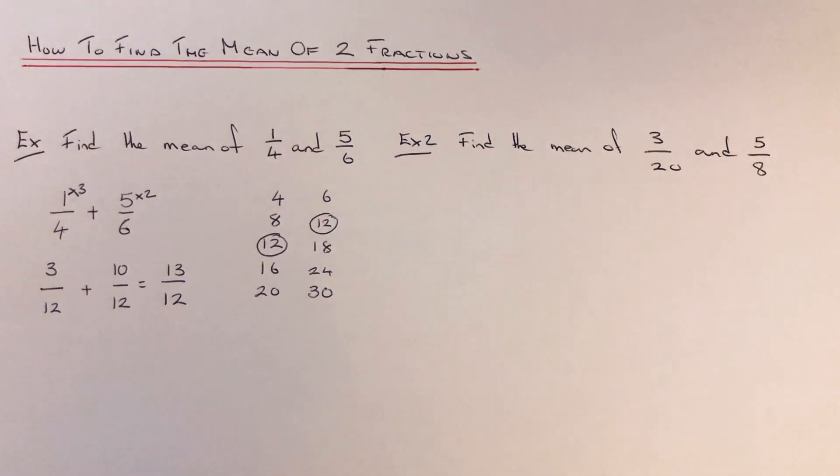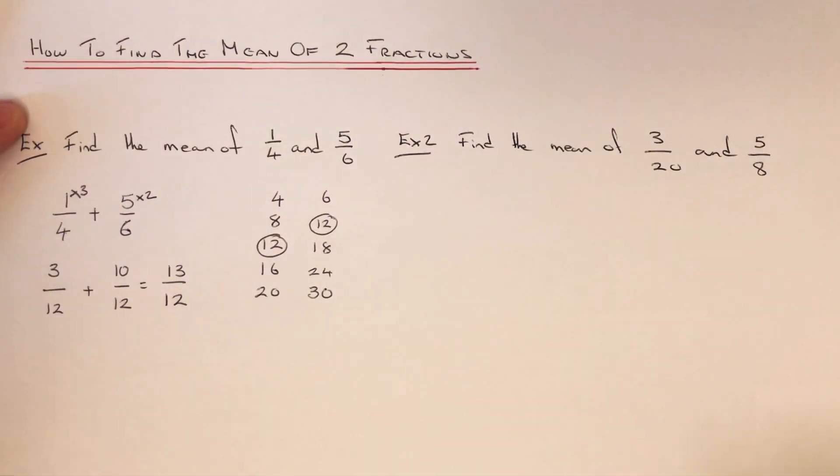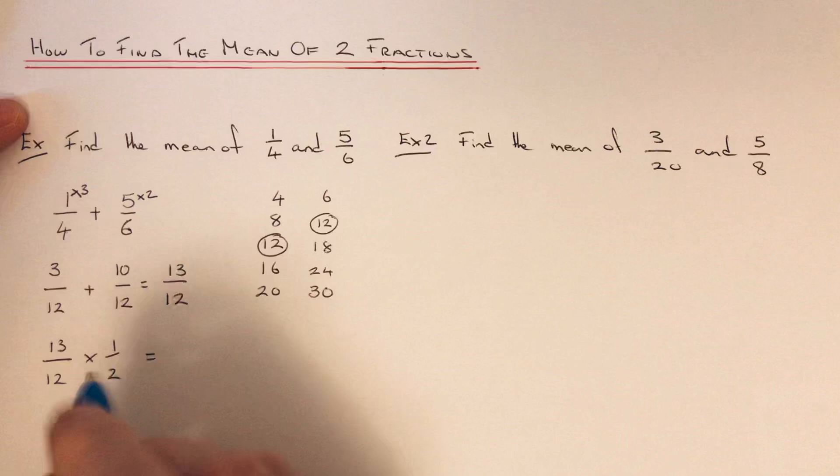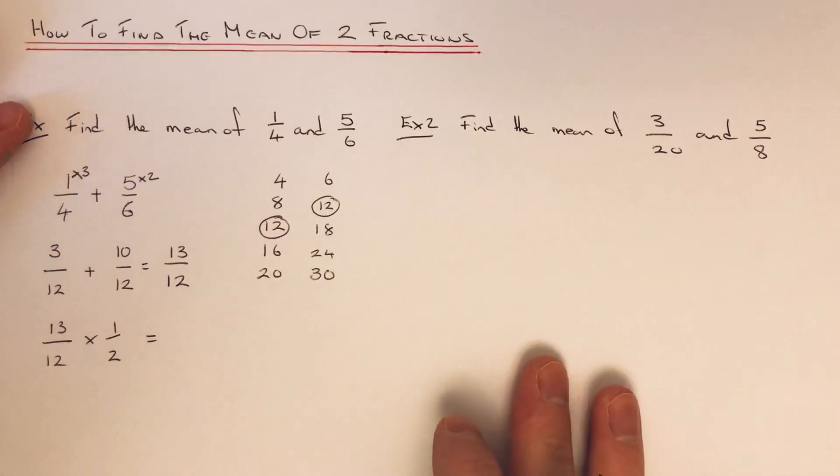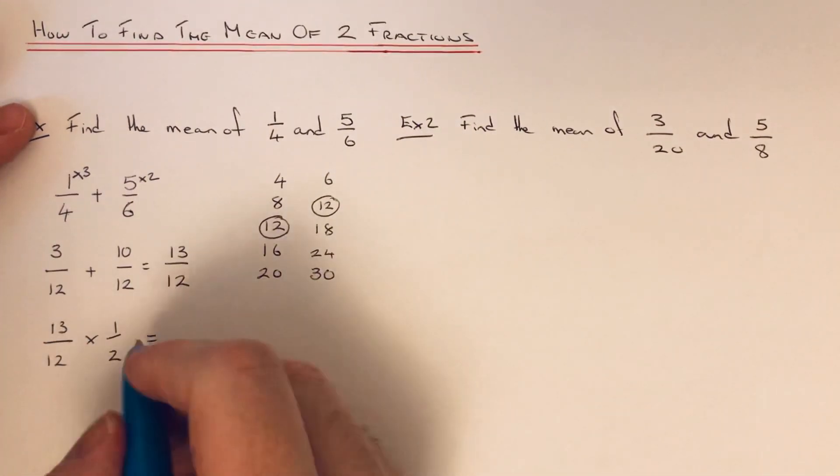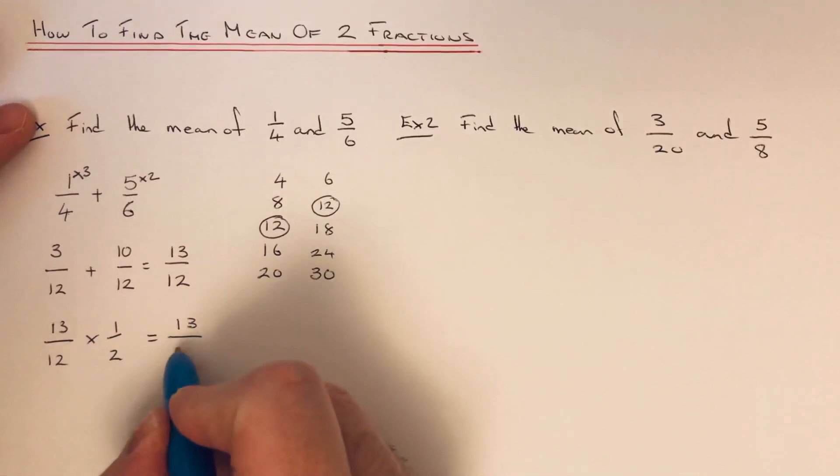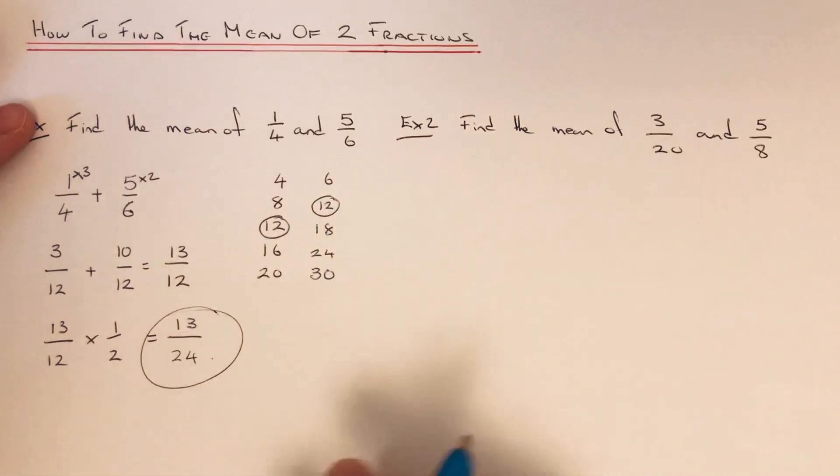Now since it's a fraction, instead of dividing by 2, multiply the fraction by 1/2, and that would be the easiest method to do. Because divided by 2 is the same as times by 1/2. So if we times this fraction by 1/2, all we need to do is multiply the numerators. 13 times 1 is 13, 12 times 2 is 24.